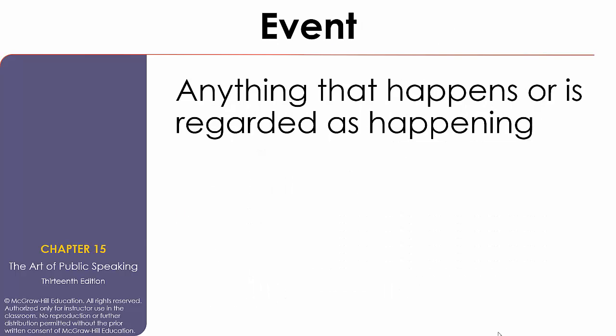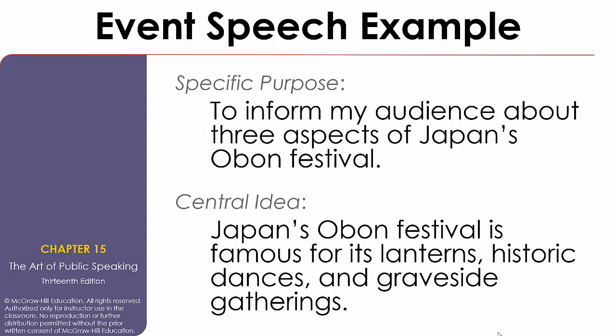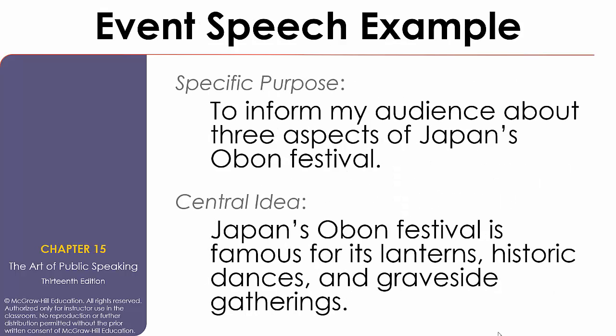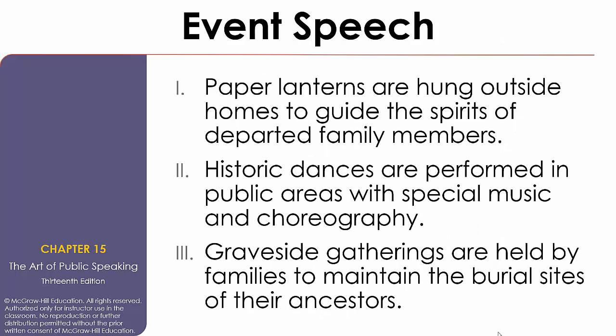An event speech informs your audience about anything that happens or is regarded as happening. For example, this would be great if you want to talk about holidays or festivals. The example given is a festival from Japan, the Oban Festival. The central idea covers what this festival is famous for: lanterns, historic dances, and graveside gatherings. So we have three main points: paper lanterns, historic dances, and graveside gatherings — derived directly from how the central idea is structured.